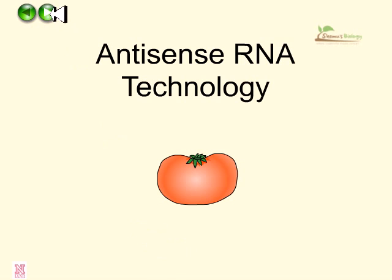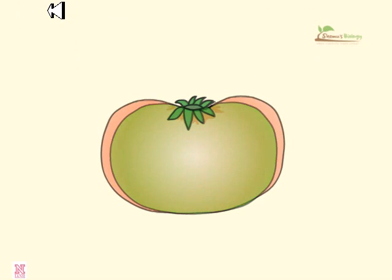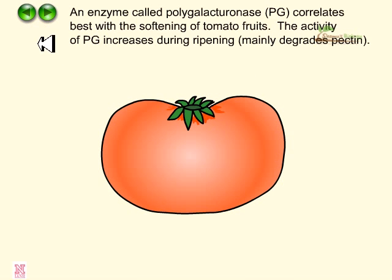As a tomato ripens, decreases in stored starch content and loss of turgor pressure are factors in the ripening process. However, one of the main contributors is thought to be changes in the structure of pectin, which is present in the cell wall. An enzyme called polygalacturonase, or PG, correlates best with the softening of the tomato fruit.